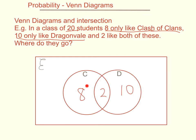The 8 here means those people just like Clash of Clans — they don't like Dragonvale, so they can't be inside the Dragonvale circle. The 10 only like Dragonvale, so they can't be inside the Clash of Clans circle. There is nobody outside, meaning no one in this class dislikes both Clash of Clans and Dragonvale.